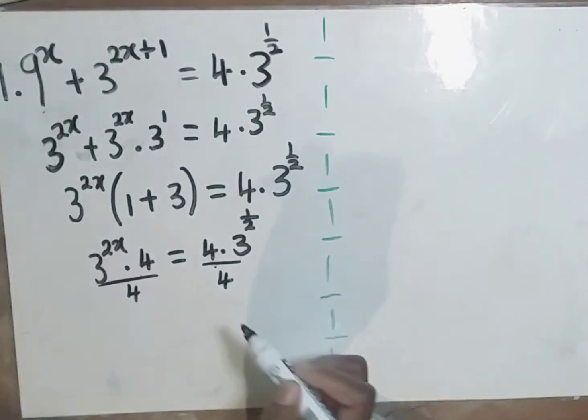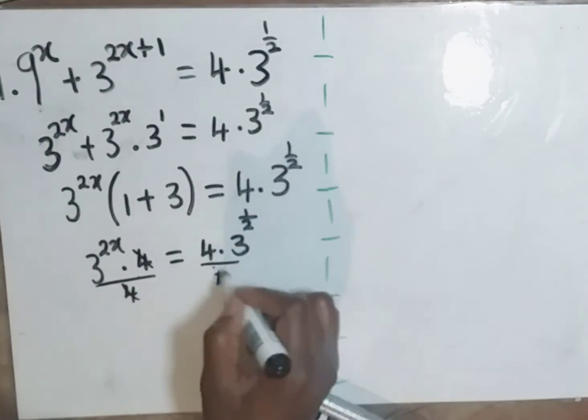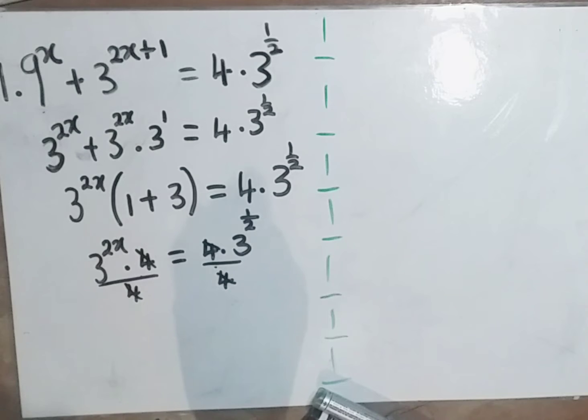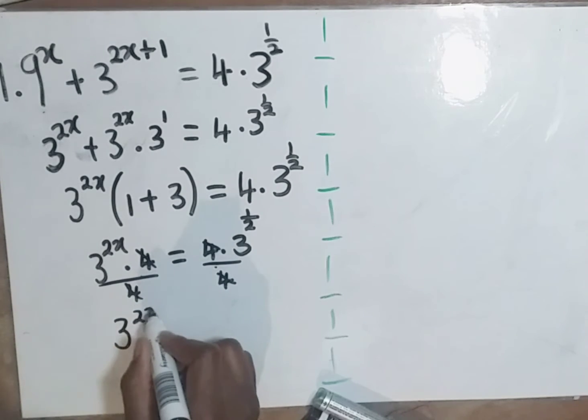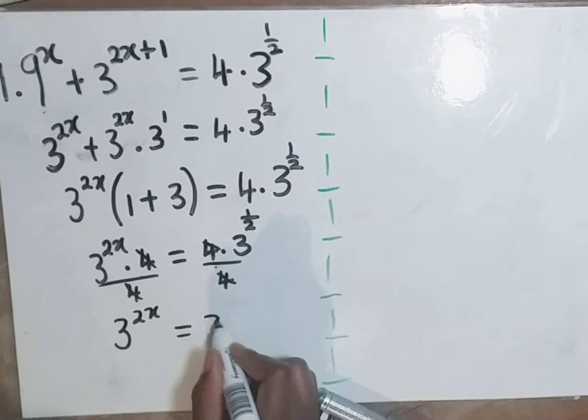When we do that, the 4s are going to cancel out. Remember what we do on the left, we also do it on the right. So this is all going to be 3 to the power 2x is equal to 3 to the power half.